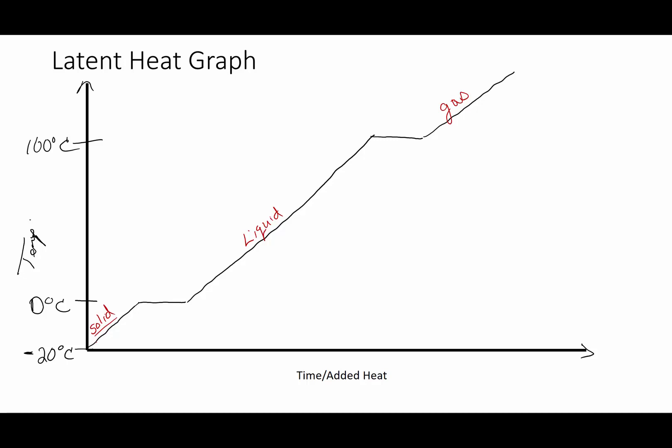Now as the slope rises with added heat, that means that we are going to be changing the kinetic energy of the molecules. So when you change the internal kinetic energy of the molecules of a substance, you're affecting its temperature. So its temperature is going up.